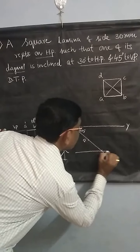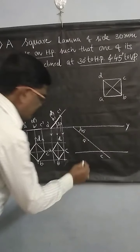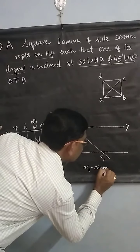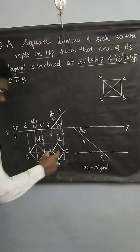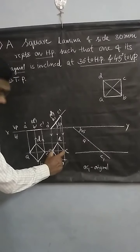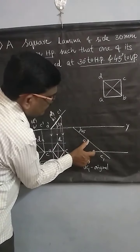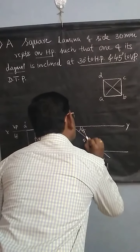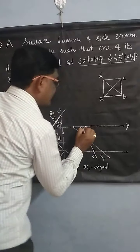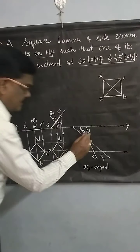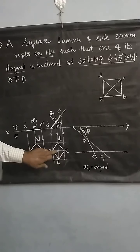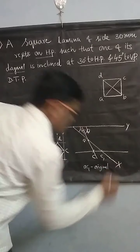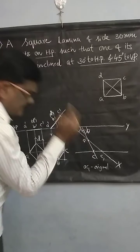At point C, you draw a locus line parallel to the XY line. AC1 is the original diagonal length. You take this length with the help of the compass and cut this length. You call this point C. You draw A to C and extend it up to the XY line. This is the angle beta made by the lamina. Now we have to reconstruct this second top view with respect to the diagonal AC, not with respect to AC1.